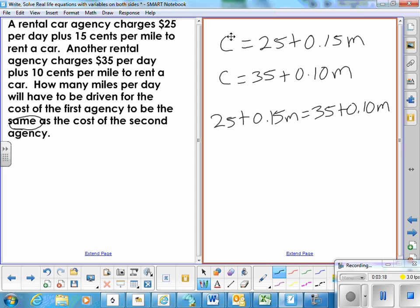So now we need to get the m terms, the variable terms, all on one side or the other. So I would suggest we leave the largest one, the $0.15 per mile, where it is and move the other one. So let's subtract $0.10 per mile from each side.